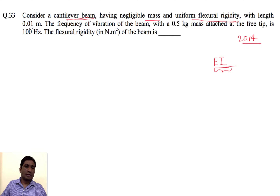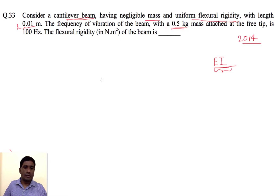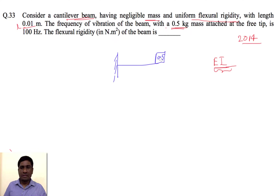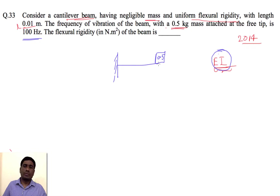The length of the cantilever beam is given, and the frequency of this vibrating beam is 100 Hz because a 0.5 kg mass is attached at the end of the cantilever beam. We need to find EI.